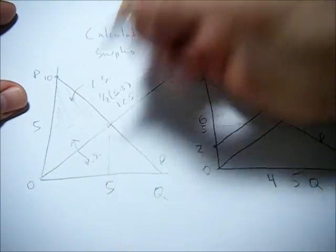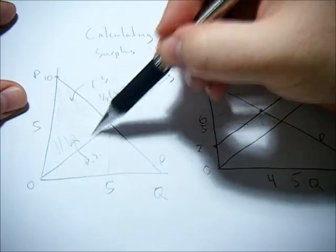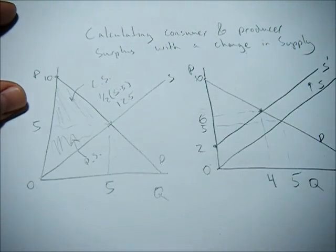Producer surplus is going to be the same. One-half times height times base is going to give us that 12.5.